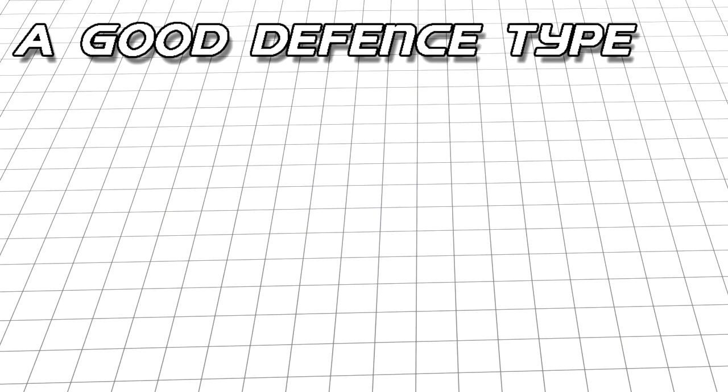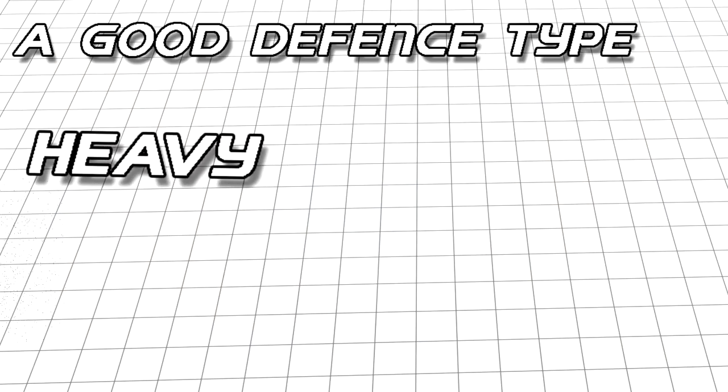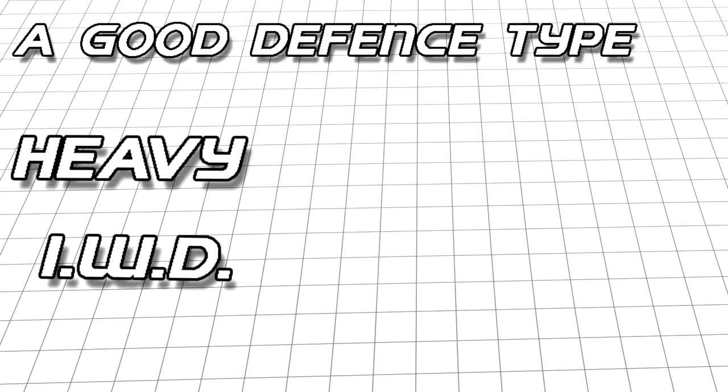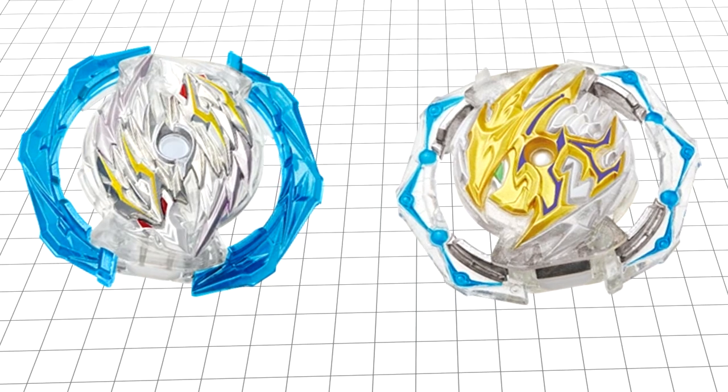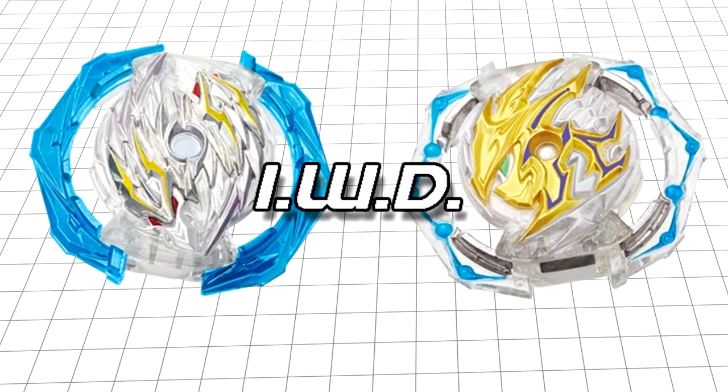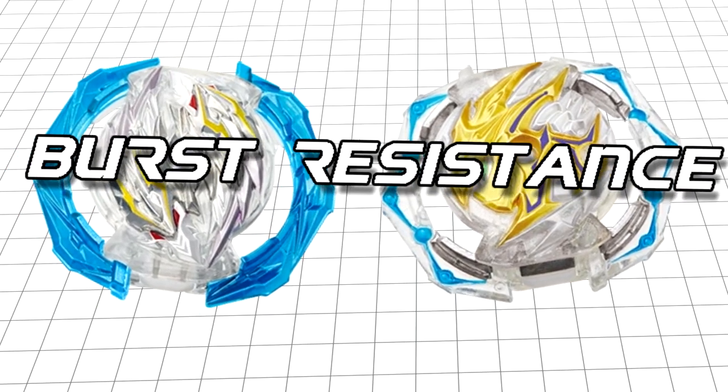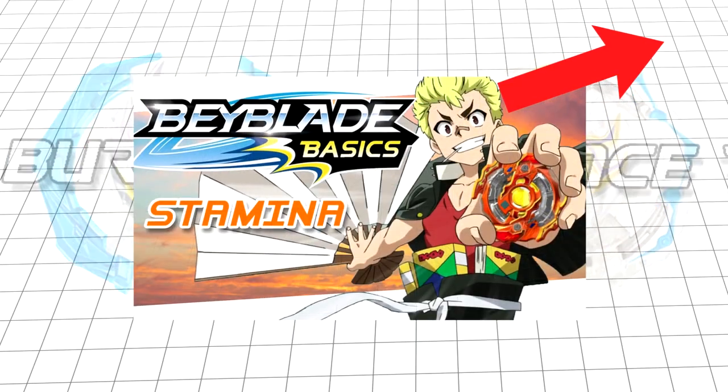To make a good defense type, you'll want to use parts that are heavy and preferably have inward weight distribution. A good choice for a DB core would be something like Longinus or Perseus. They should, in theory, create more IWD and therefore greater burst resistance. Check out the video on stamina types to find out why.